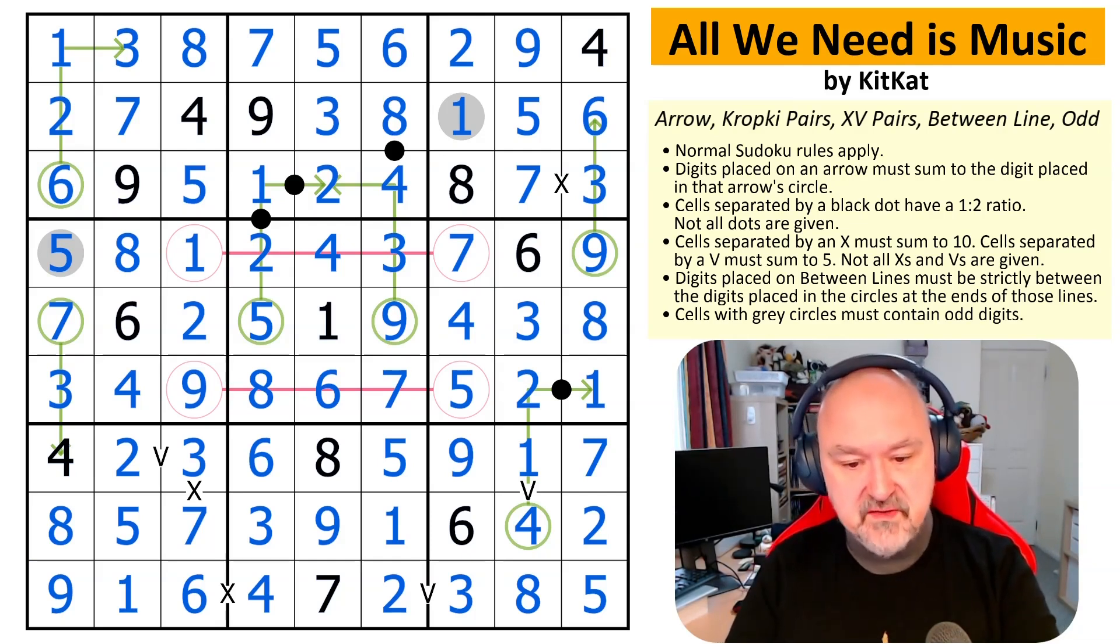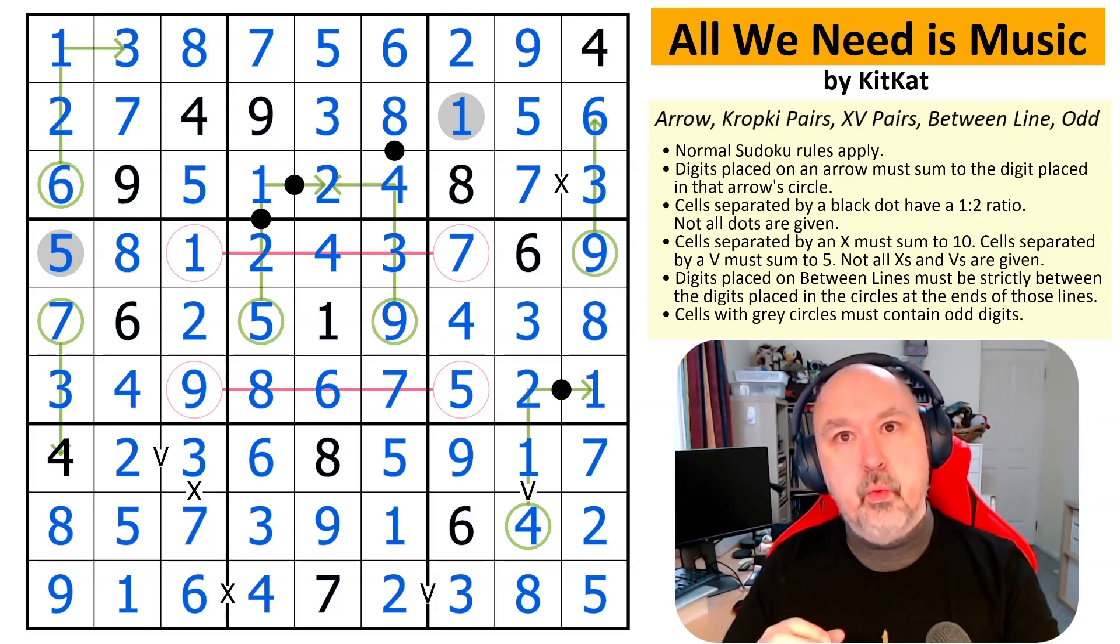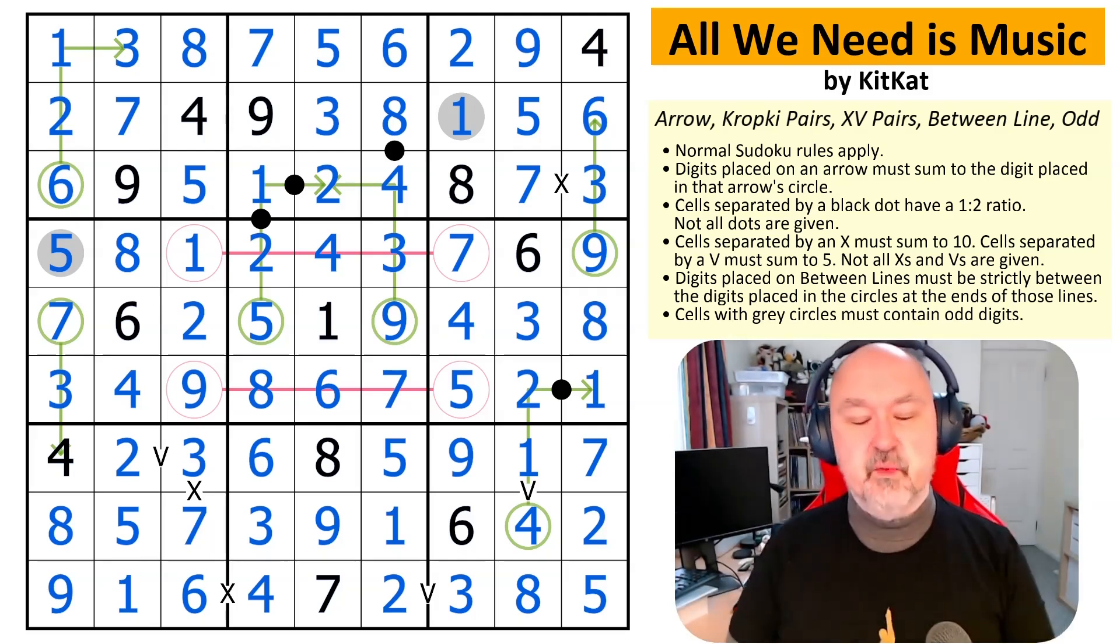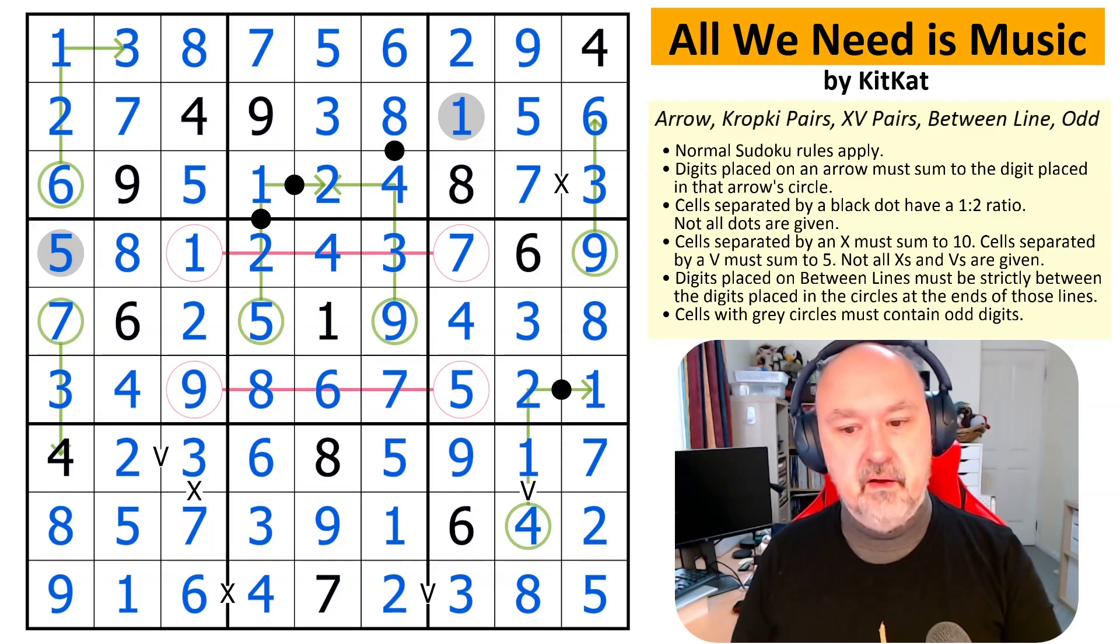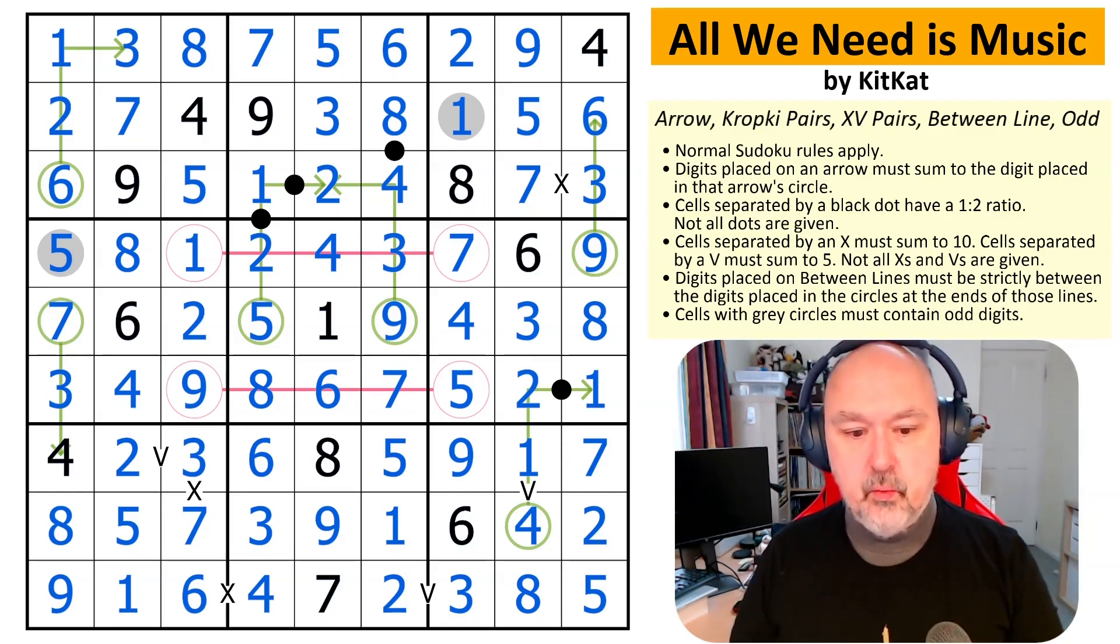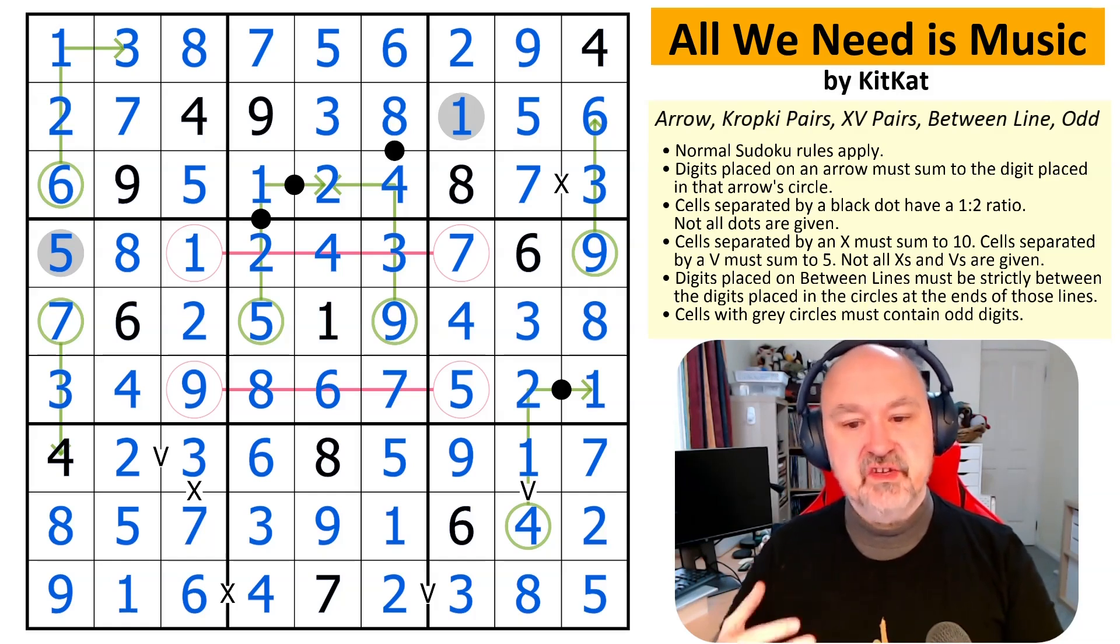That was a very cool first puzzle. There were some nice interactions of the constraints and a lot for the solver to discover. As setters get more experienced, I think they get a little bit more comfortable with exploring what constraints are needed and what's not. It becomes very easy when you're first setting a puzzle to go, hang on, if I put a ratio dot here, or if I put an odd here, or if I put a thermo here, then I can resolve this thing rather than looking for ways of resolving a conflict that you've found on your grid in a way that fits the theme of the puzzle.